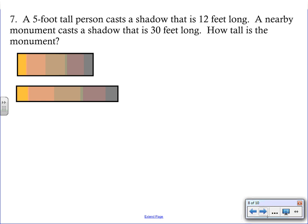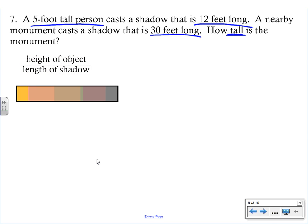Another common application with proportions is comparing heights to shadows. In fact, if you ever take our forestry class here, I have seen students out in the back of the school measuring some of the trees on our school property using this exact method. We have a 5 foot tall person, and we know that they cast a shadow that is 12 feet long. So looking at those two numbers, we are comparing the height of a person to the length of a shadow. Now we have a monument that we know the shadow of that monument is 30 feet long. And what we want to figure out is how tall is that monument.